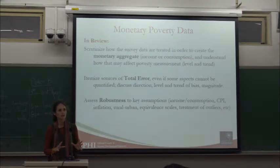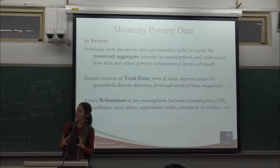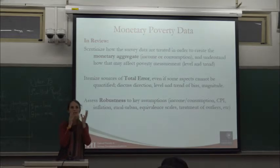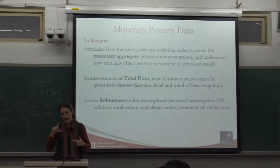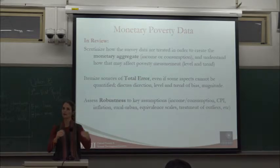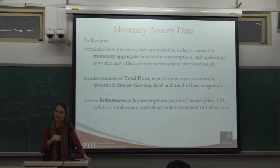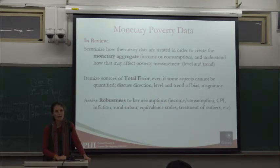In terms of building the welfare aggregate, my suggestion is that we really scrutinize how survey data are treated to become this consumption aggregate, understand the decisions that may affect poverty — like imputation of rents — and do robustness tests on them, as is already best practice. But going beyond that to the cutting edge: start to itemize the sources of total error and discuss them constructively, to try to improve.